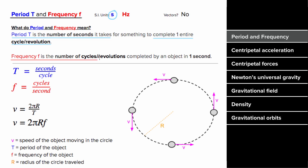The frequency is the number of cycles, circles, or revolutions completed in one second. So if there's some process that's repeating, the number of times the process repeats in one second would be the frequency. This means it has units of one over second, which is just called the hertz. Because the period and frequency are defined in this inverse way — seconds per cycle or cycles per second — each one is just the inverse of the other.